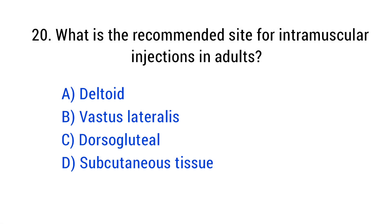Question number 20. What is the recommended site for intramuscular injections in adults? The right answer is option A: Deltoid.